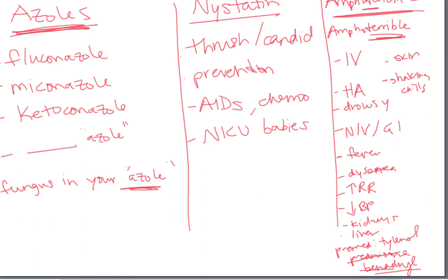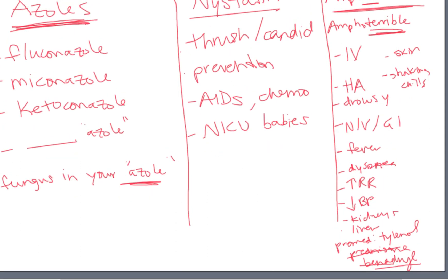Remember that Amphotericin has just Amphoterrible side effects and pretty much any side effect is going to be present. If you're memorizing this for an exam, they're probably going to ask something like: the patient develops severe shaking and high fever — what do you do? You need to recognize that this is a normal side effect of Amphotericin, not necessarily an actual allergic reaction. Amphotericin has terrible side effects and they are normal.